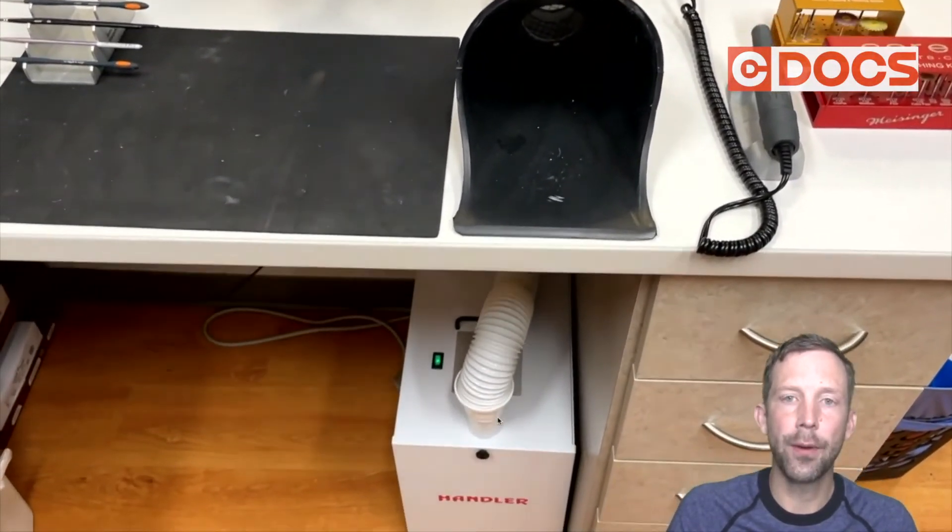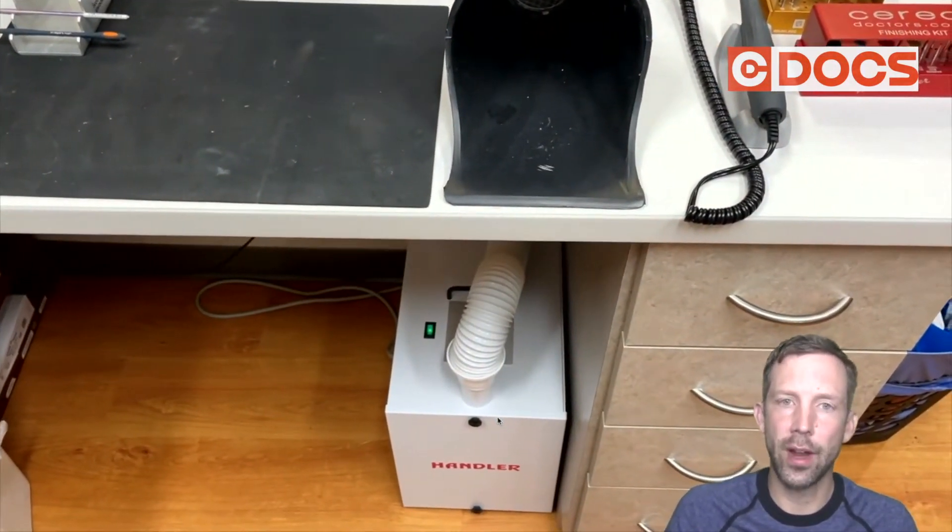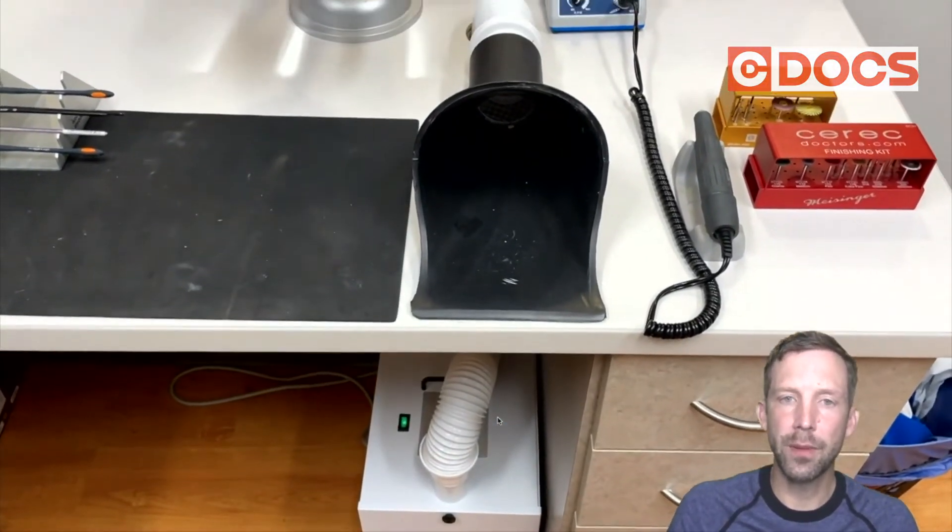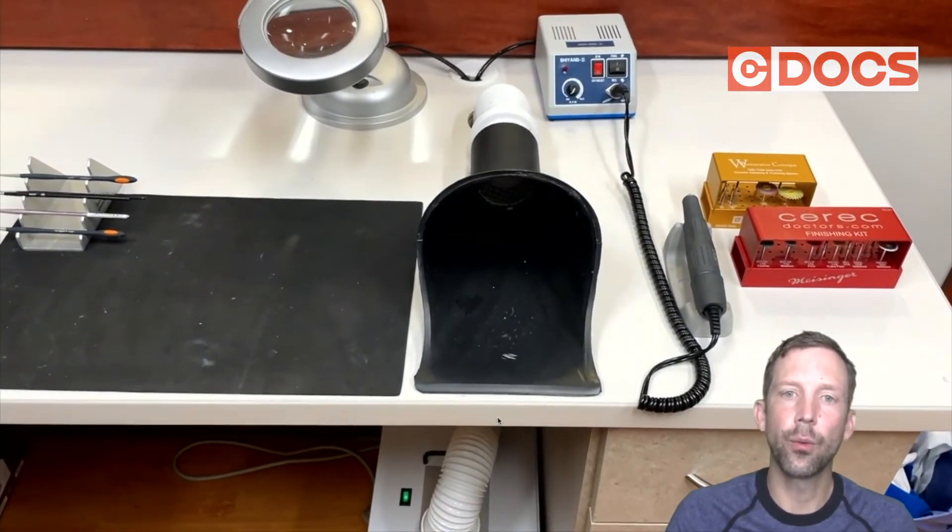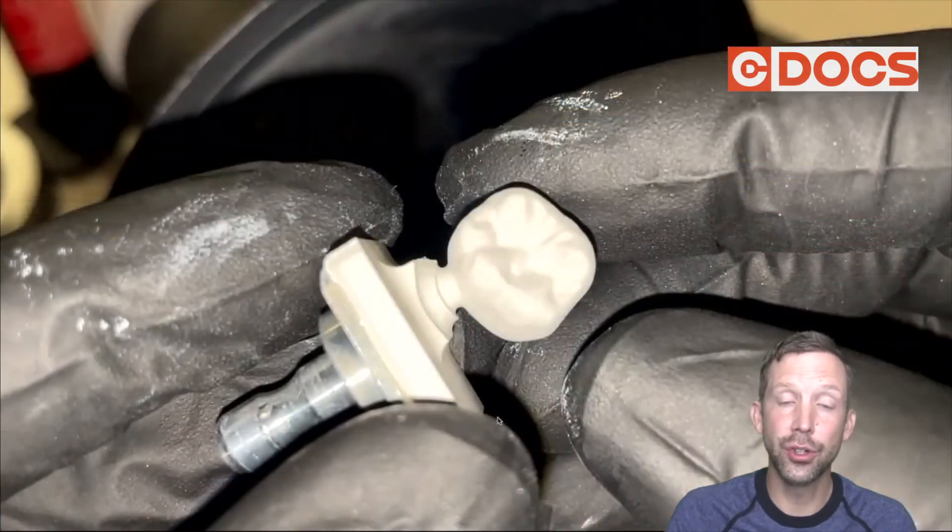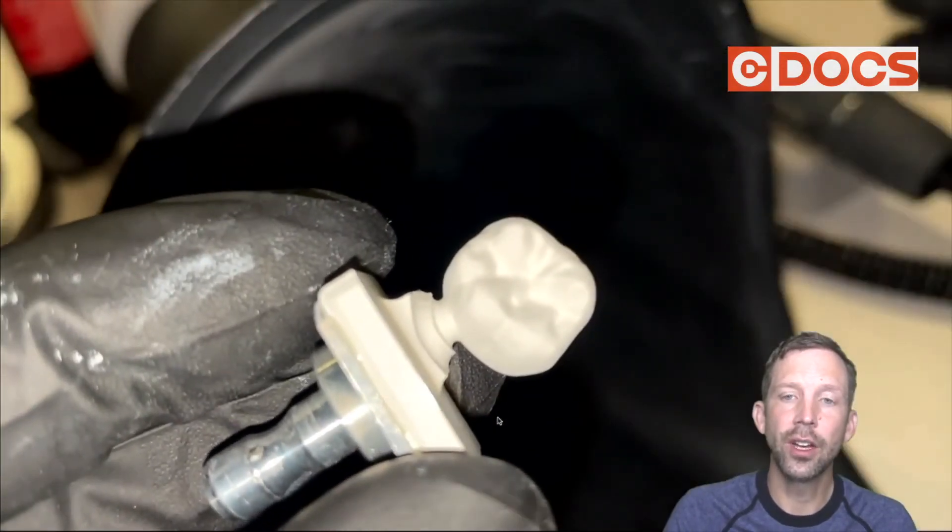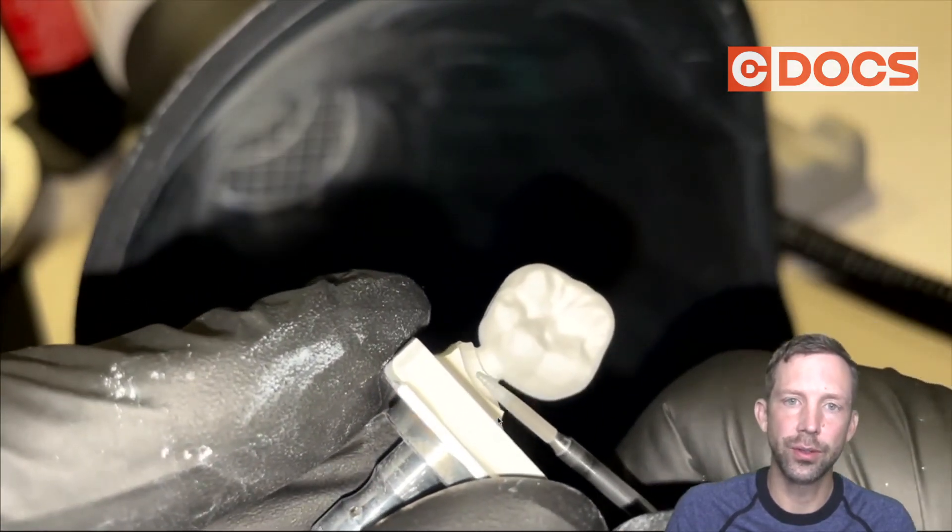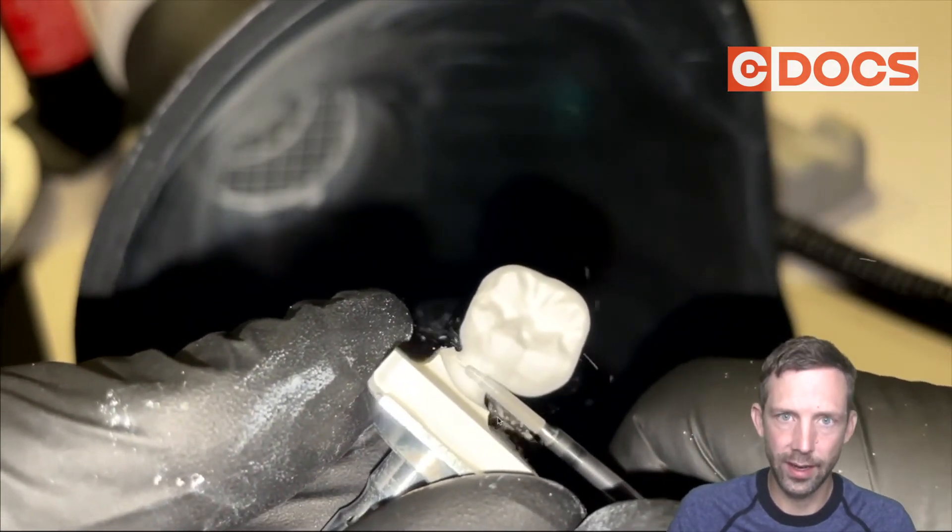Now it's just a HEPA filter in there, it's going to have a bag to capture all this dust, and I put this in the lab right where the milling units are at. And when I go ahead and start to adjust zirconia, you can see that we turn this suction on and it's going to suck up all the dust and I don't have to worry about breathing it in.